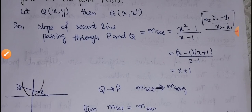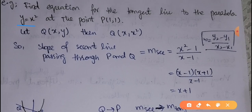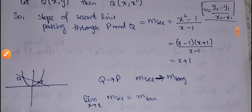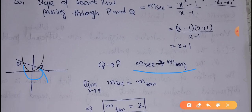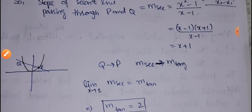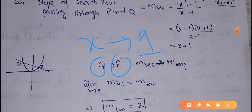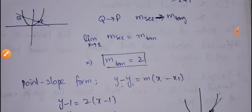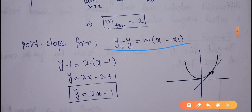With the secant line passing through P(1, 1) and Q(x, x²) — since y = x² — the slope of the secant line simplifies to (x² − 1)/(x − 1) = x + 1. As Q approaches P, x approaches 1, so we apply the limit: lim(x→1) of (x + 1) = 1 + 1 = 2. The slope of the tangent line is 2. Inserting into the point-slope form gives the equation of the tangent line as y = 2x − 1.